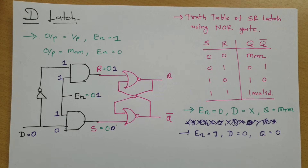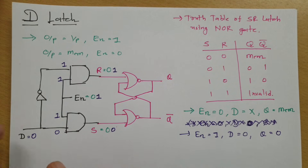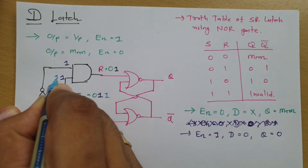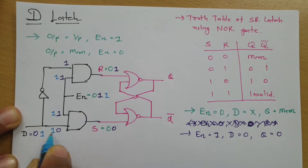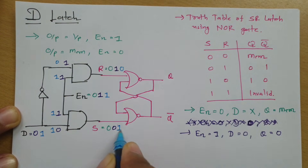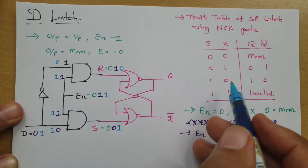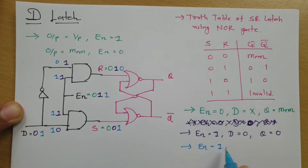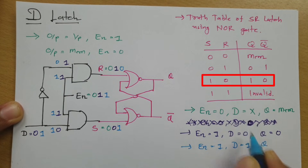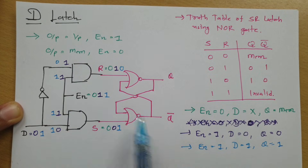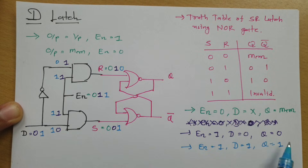Now let us consider one more case to resolve our understanding further. Enable equals 1 and D equals 1. With enable=1 and D=1, this D line is 1 and the inverted D makes 0. So the set AND gate gets inputs 0 and 1, giving S=1... wait — 1 and 1 makes S=1 and 0 and 1 makes R=0. When set=1 and reset=0, Q will be 1. So in this third case, enable=1 and D=1, Q equals 1.